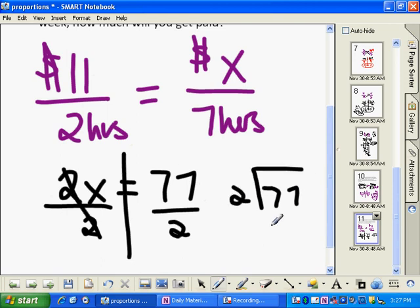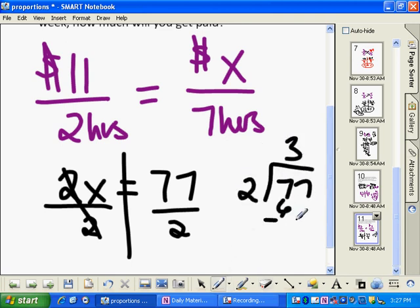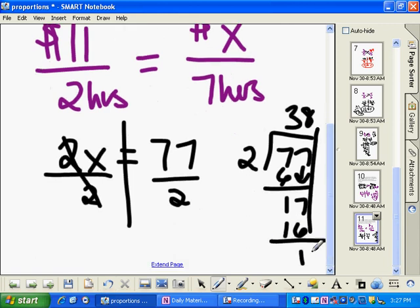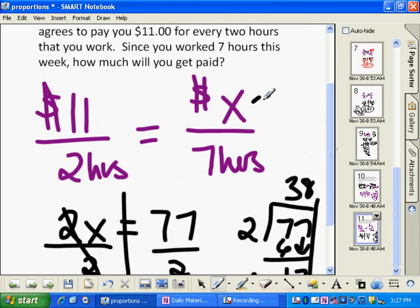So now I'm going to do a little bit of math over here off to the side. 2 goes into 7. I'm doing this in my head. Okay, 2 goes into 77 3 times. Subtract, get 1, bring down my 7. It goes in 8 times. And I subtract and I get 1. So it's 38 and 1 half, which is the same thing as 38.50. So you would make $38.50 working for your dad for seven hours.